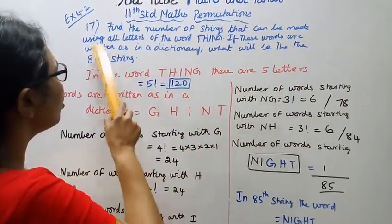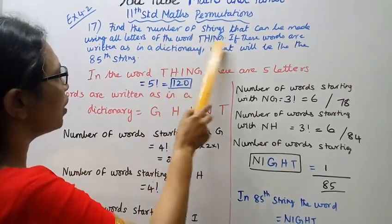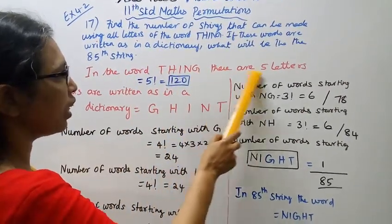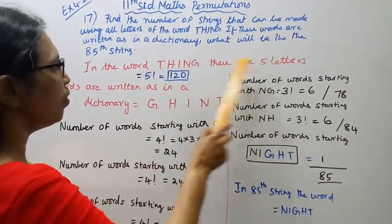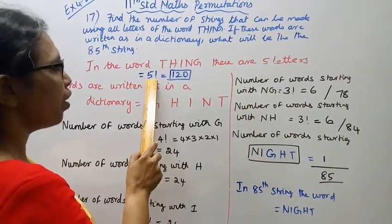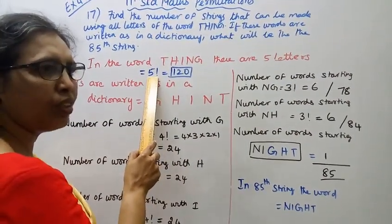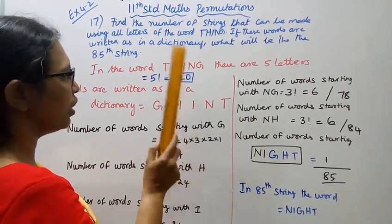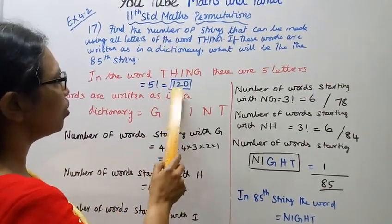Find the number of strings that can be made using all letters of the word THING. In the word THING, there are 5 letters. 5 letters equals 5 factorial. 5 factorial equals 5 into 4 into 3 into 2 into 1, that is 120. First question answer: 120.